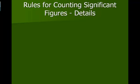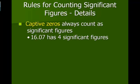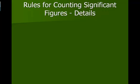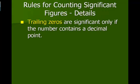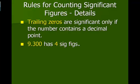Captive zeros always count as significant, so 16.07 would have four significant figures. Trailing zeros are only significant if the number contains a decimal point, so 9.300 would have four significant figures.